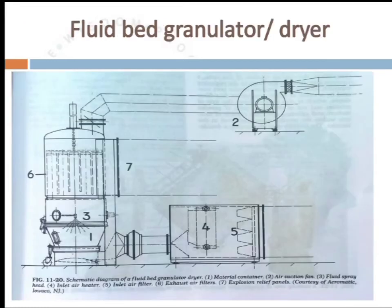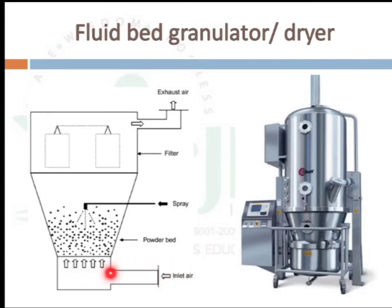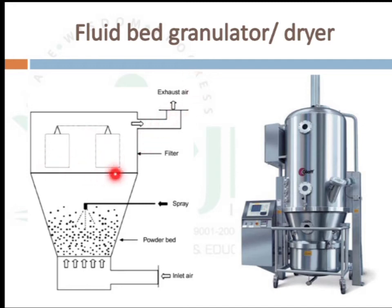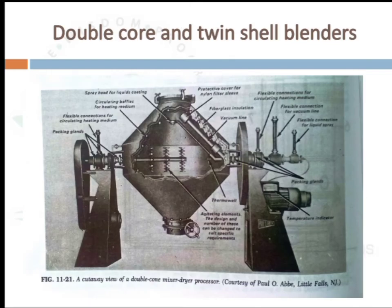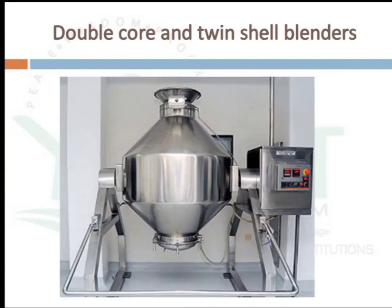The fluidized bed dryer has a provision for heated, filtered inlet air. The powder to be granulated is placed in the powder bed. The granulating or binding agent is added and heated inlet air flows from bottom to top; exhaust air exits through a filter to retain granules. The double cone or tin shell blender has a double-cone shaped vessel used for mixing as well as granulation.